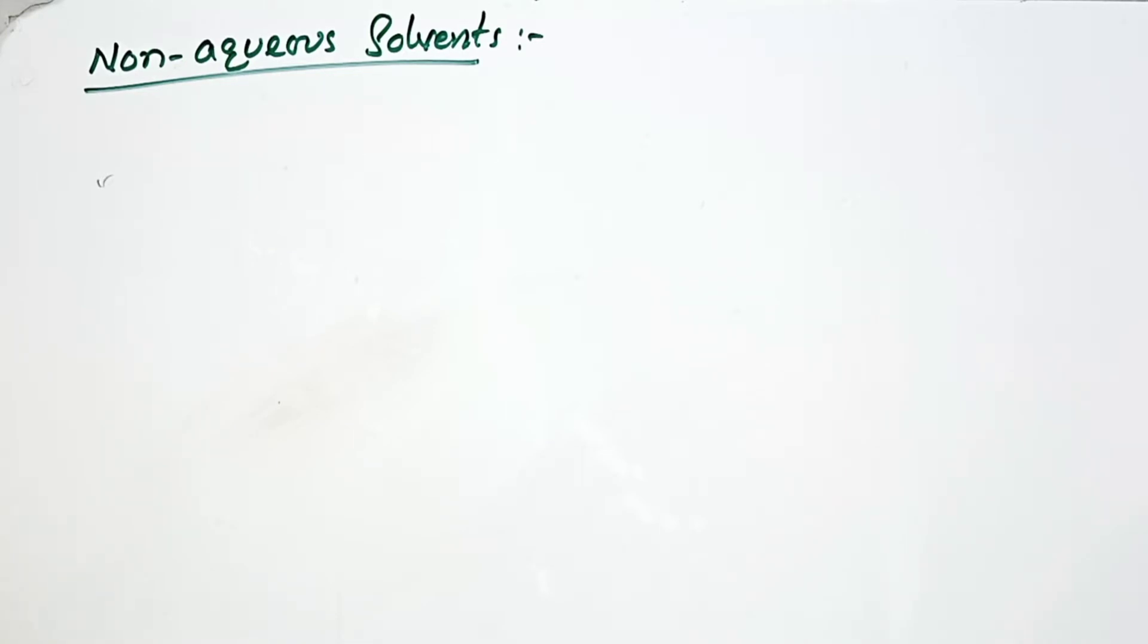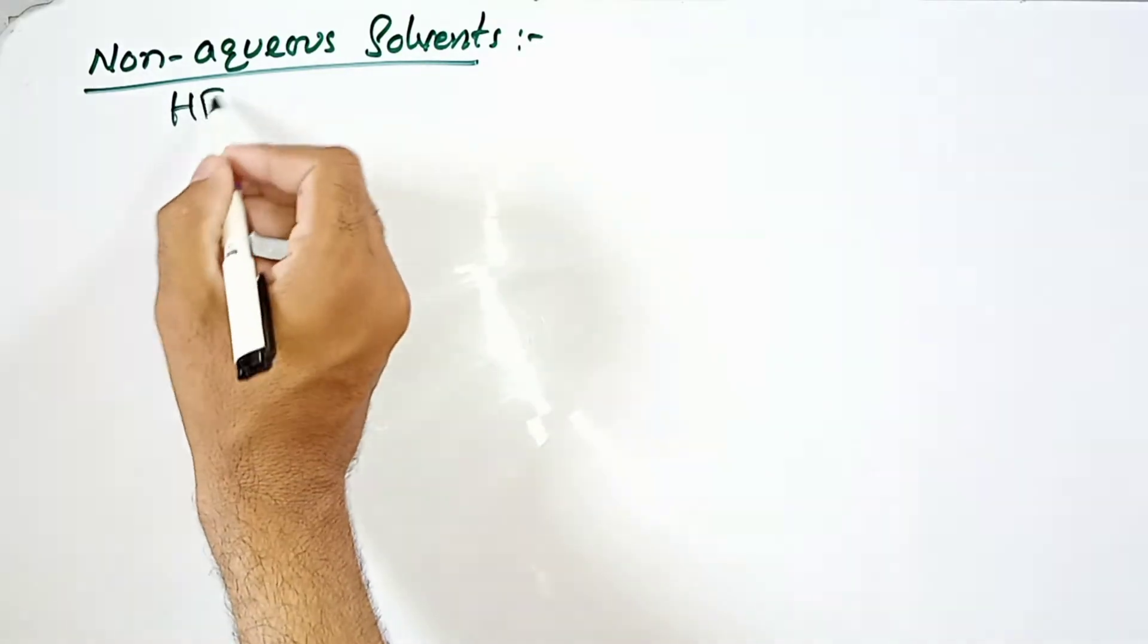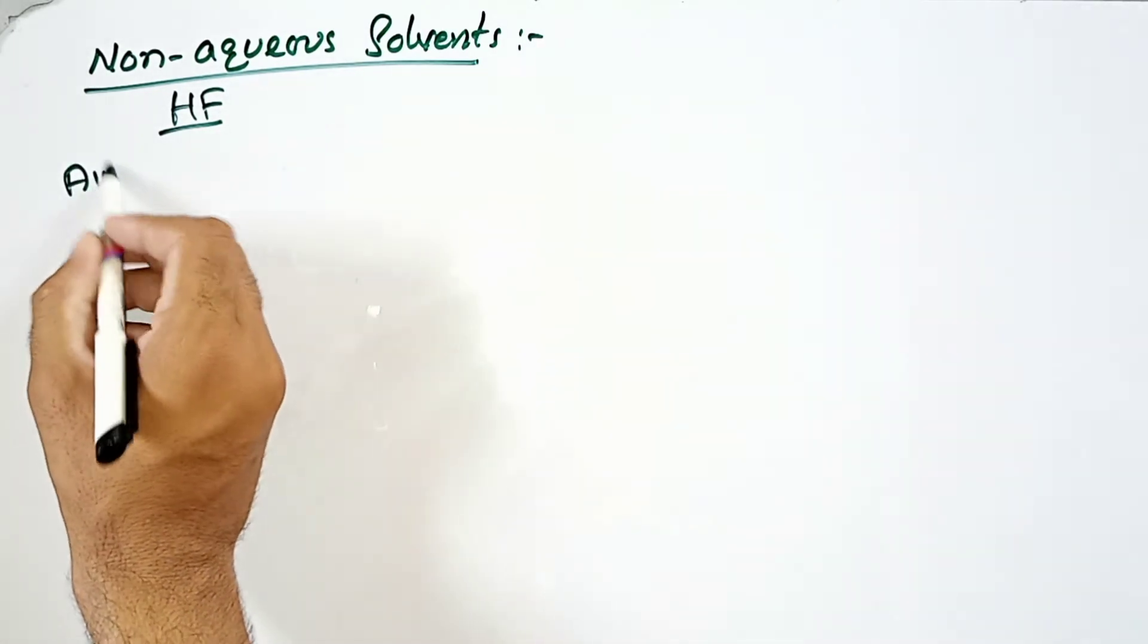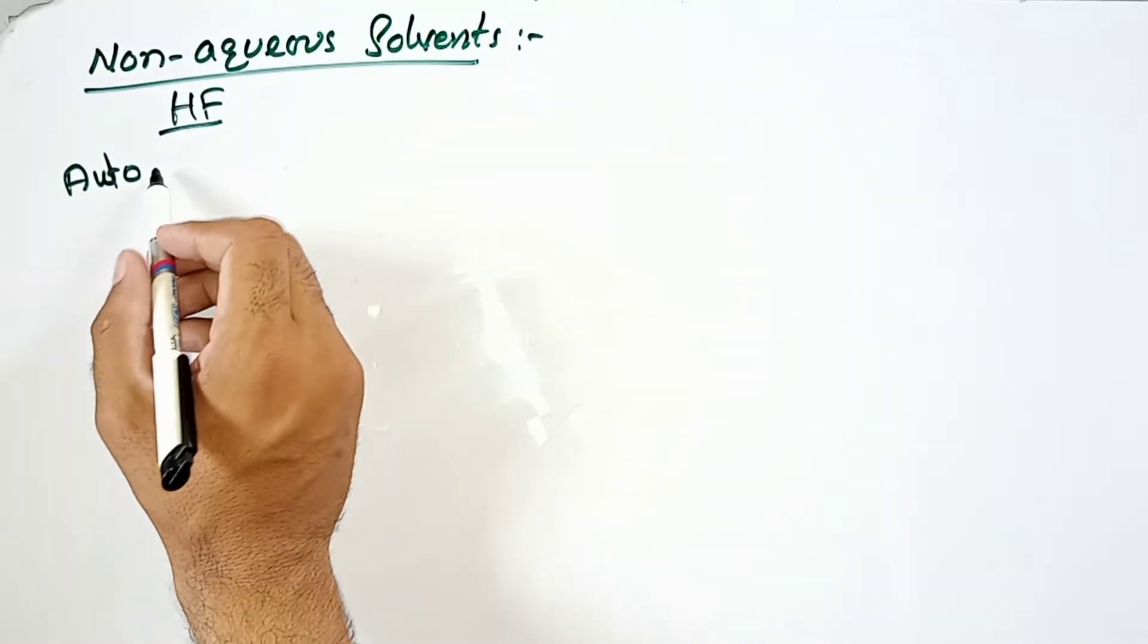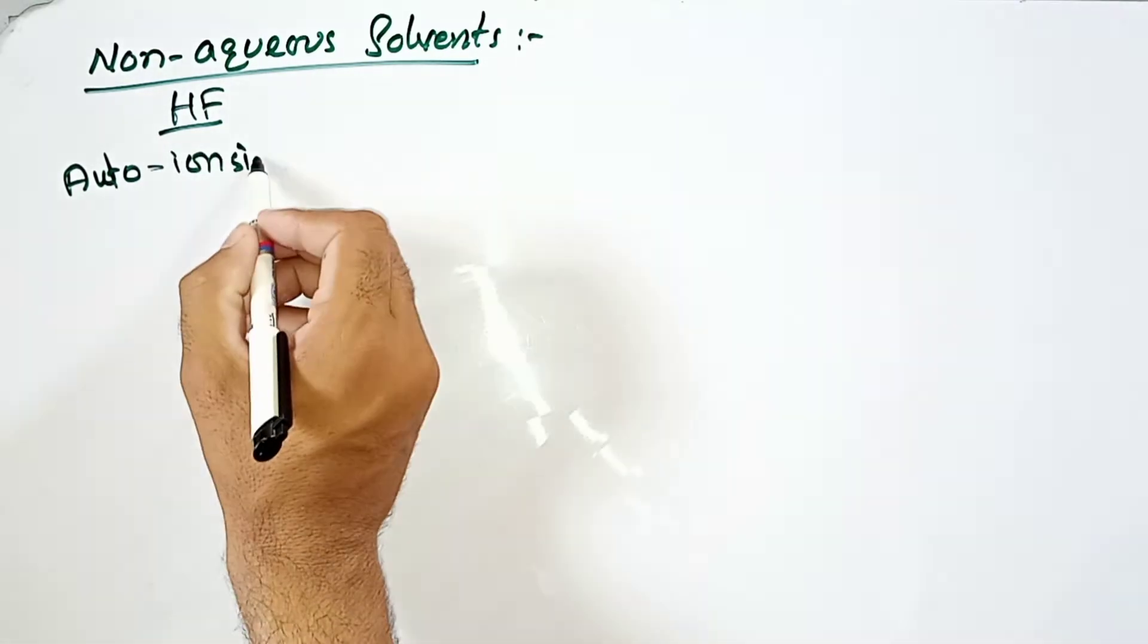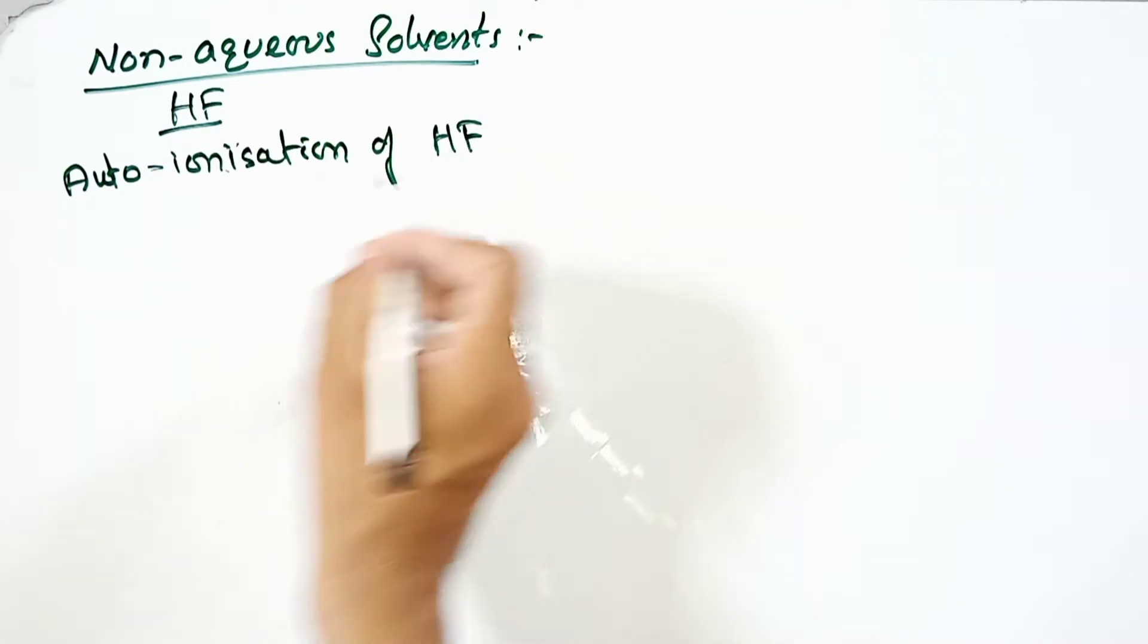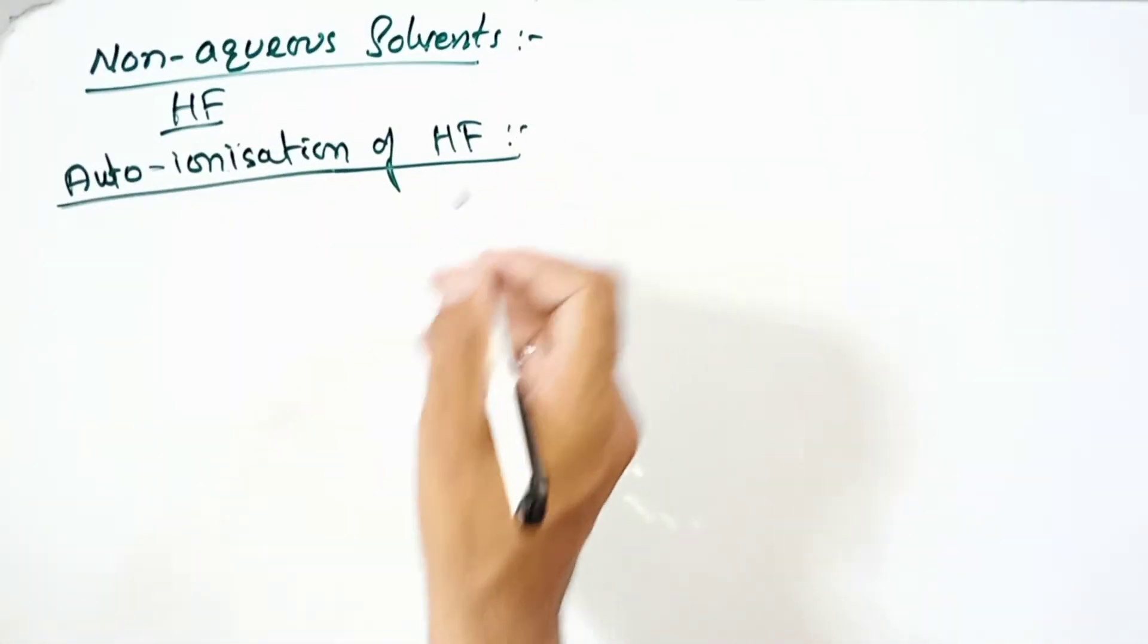Today is lecture number 6 of non-aqueous solvents. In today's lecture we will discuss, in previous lecture I started one energetic solvent, one non-aqueous solvent that is called HF, hydrofluoric acid, hydrogen fluoride, liquid hydrogen fluoride. In previous lecture I explained the characteristics, the general property of liquid hydrogen fluoride. But in today's lecture I will explain one another characteristic of HF that is auto-ionization, or you can say that auto-ionization is self-ionization of HF.